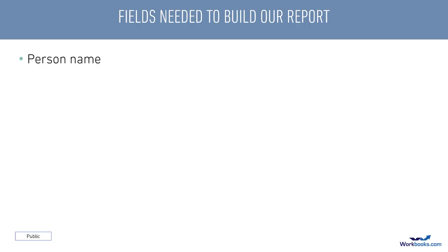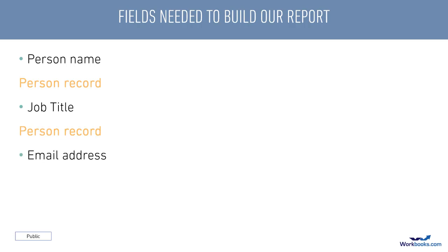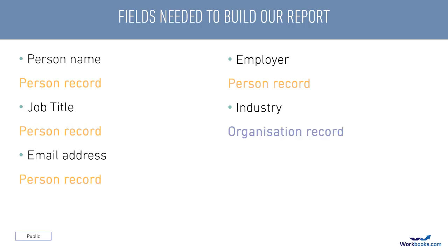We know that we want the person name and that's quite straightforward - that's on the person record. We also want the job title which again is on the person record. Same again with the email address. We know that we want the employer field and this too is on a person record. We need the industry field - that's on the organisation record. In reality there is an industry field on the person record too but very few customers use that field, which is why we need to select the value on the organisation record. And lastly it's always good practice to include a unique identifier, so we'll use the person reference which is on the person record.